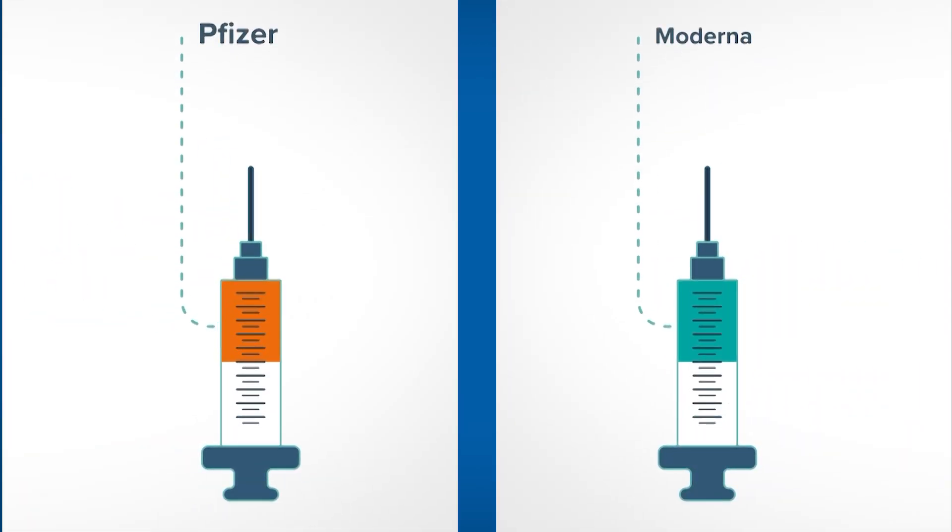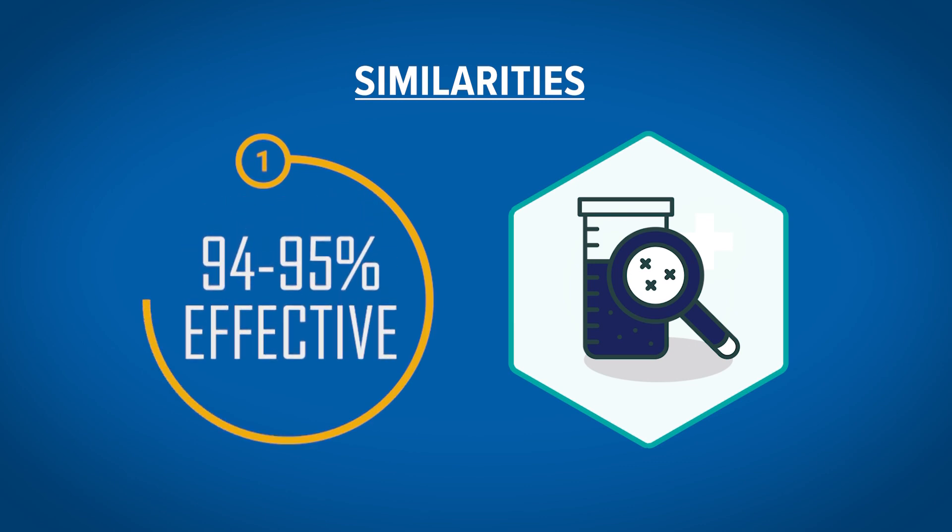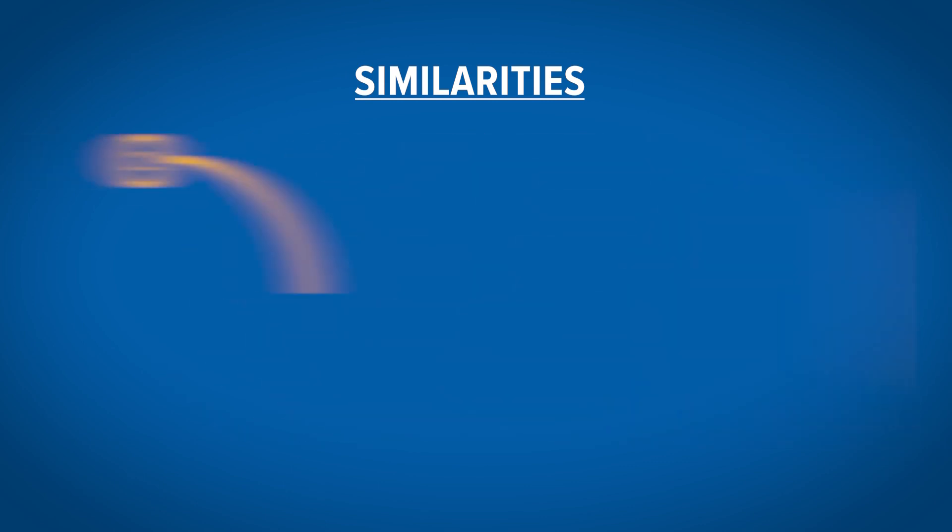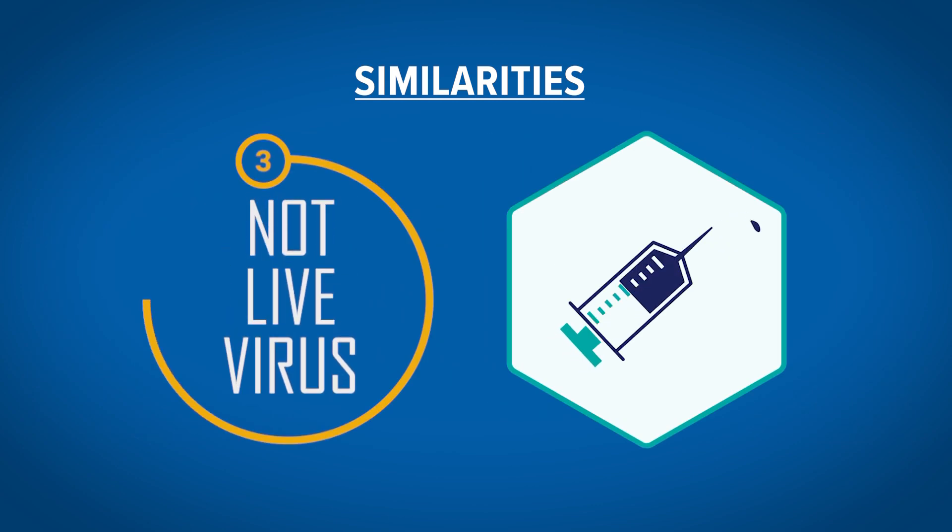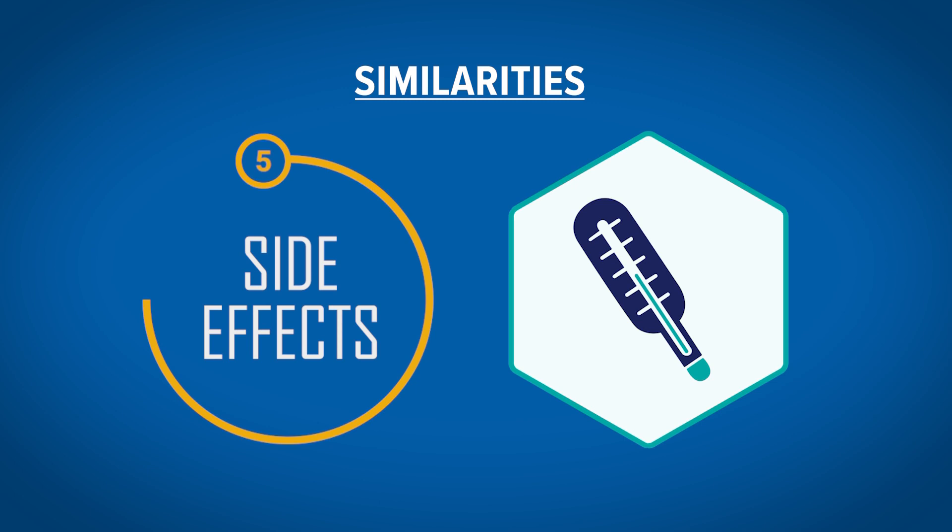The first thing to know about these two vaccines is that they're largely similar. Data shows both are between 94 and 95% effective. Both require two doses. Neither is a live virus vaccine. Neither affects your body's DNA. Reported side effects for both are nearly identical.